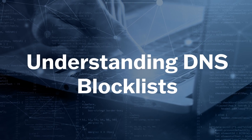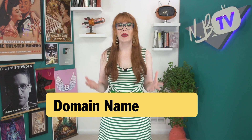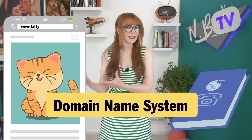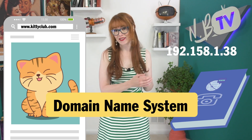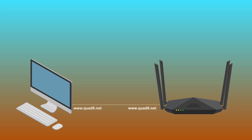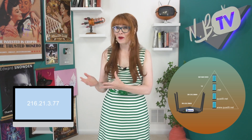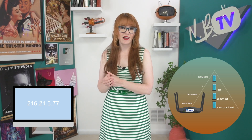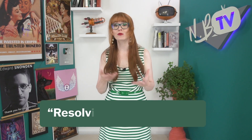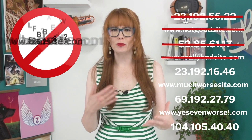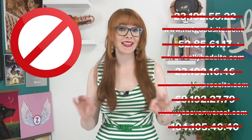Let's get started by diving into DNS itself. It stands for the domain name system and acts as the internet's phone book, translating user-friendly URLs into computer-readable IP addresses. When you want to visit a website, your computer will send the site's URL to a DNS resolver. The resolver will find out its IP address and send it back to your computer. Your computer must know a website's IP address in order to connect to it. This conversion process is called resolving the DNS query. A DNS blocklist is a mechanism to filter or block specific domains or IP addresses at this DNS level.